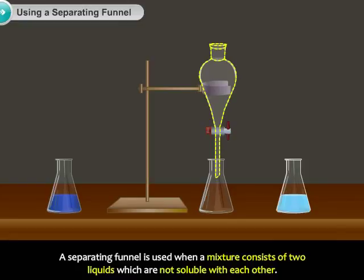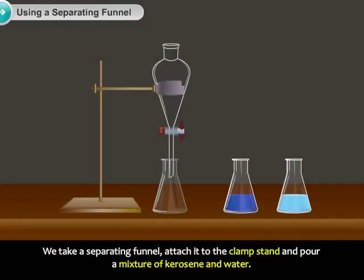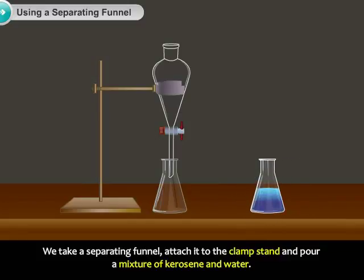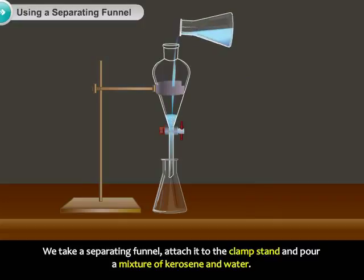A separating funnel is used when a mixture consists of two liquids which are not soluble with each other. We take a separating funnel, attach it to the clamp stand and pour a mixture of kerosene and water.